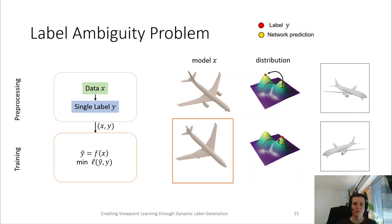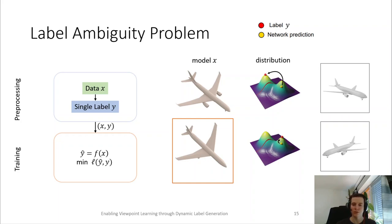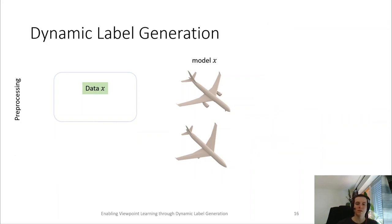But still similar enough for the network to make a similar prediction. Now again, the network receives contradicting gradients for very similar input and will be prevented from learning a meaningful prediction. And it is clear that in this case, it would be beneficial to provide the same label for both of these inputs, and ideally, we would select the closer of the two labels, which is closer to the prediction. For this, we present our dynamic label generation approach.